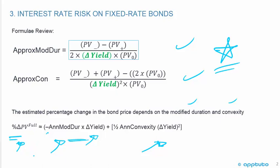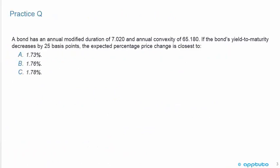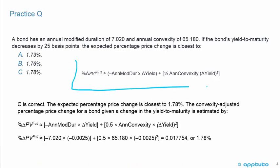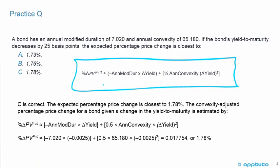The best way to tackle this LOS is with practice questions. First question: a bond has an annual modified duration of 7.02 and an annual convexity of 65.18. If the bond's yield to maturity decreases by 25 basis points, the expected percentage price change is closest to: A) 1.73%, B) 1.76%, or C) 1.78%? This question is not too bad if you've memorized the formula. The change in yield is 25 basis points, which is 0.0025.